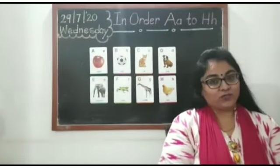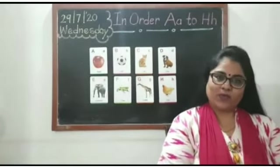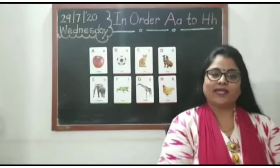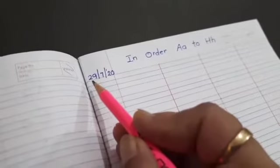Now, I will show you how to write in order A to H in our English notebook. Today's date is 29th July 20.